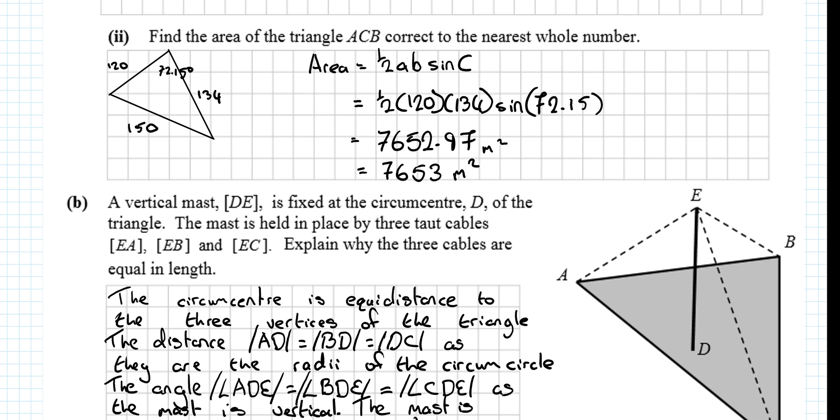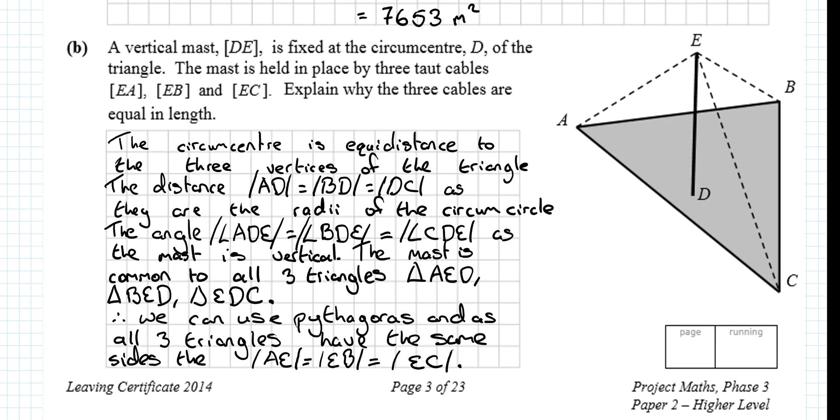The next part of the question isn't really trigonometry. It falls more into the geometry bracket. So vertical mast DE is fixed at the circumcentre. Now, it's important to know what the circumcentre is. The circumcentre is the point, now this isn't going to look like a circle because it's not on a flat surface, but this point here is equidistant from that and that and that. They're the same distance. They're the radius, or the radii, plural, of the circle.